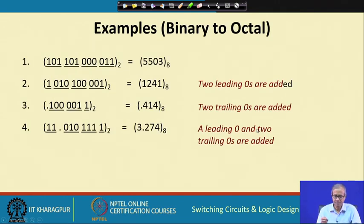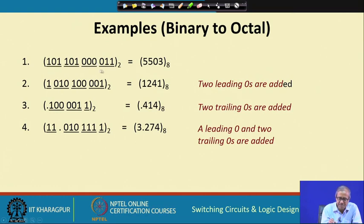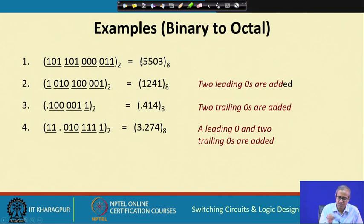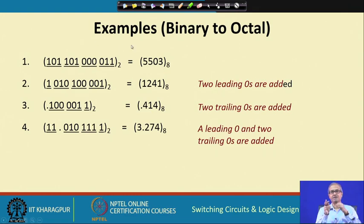Let us take some examples. For the binary number 1011010000011, there are 12 bits, divisible by 3. Making groups of 3 from the right: 011 = 3, 000 = 0, 010 = 2, but wait — 101 = 5 and 101 = 5 — giving the octal result. This is a straightforward conversion, and you can see the advantage: it is one-to-one, with no multiplication or division required unlike decimal-to-binary conversion.